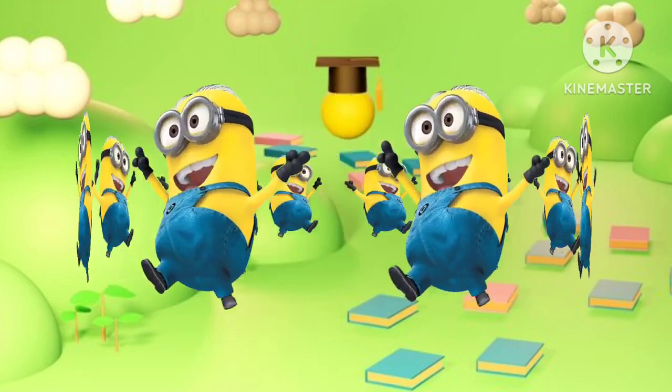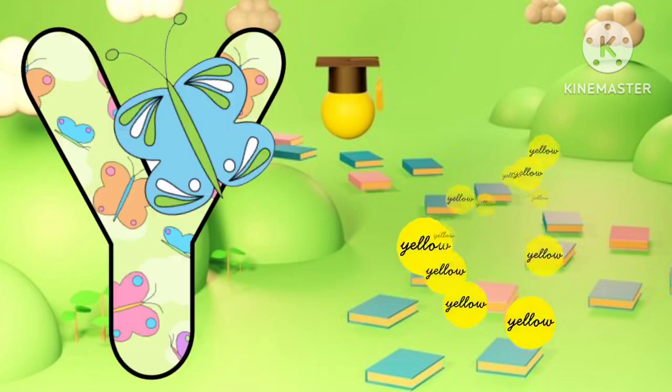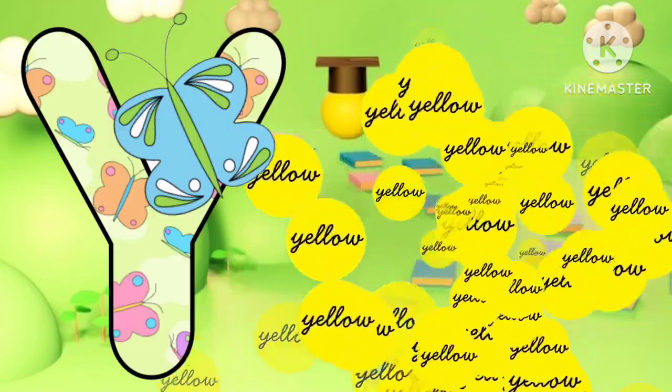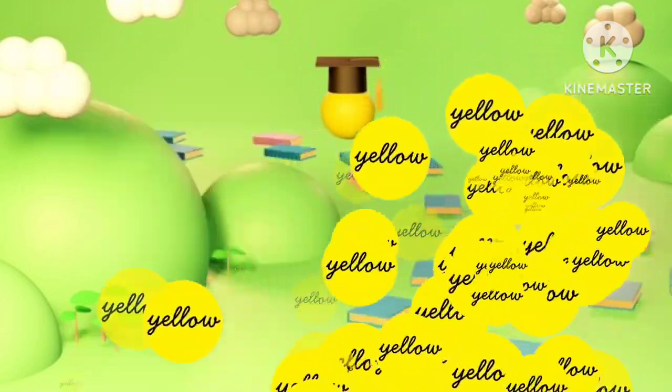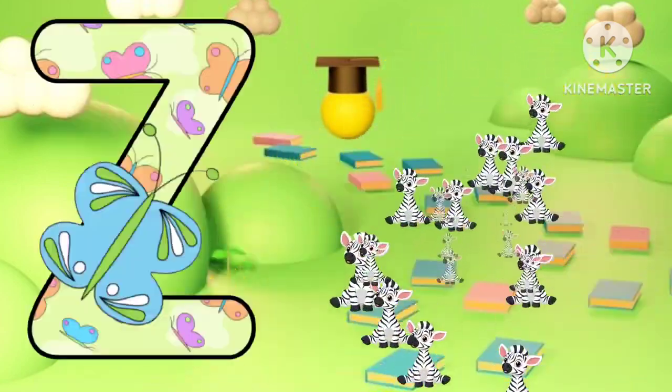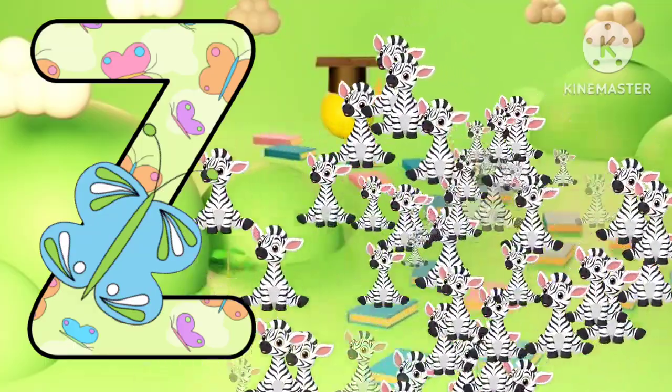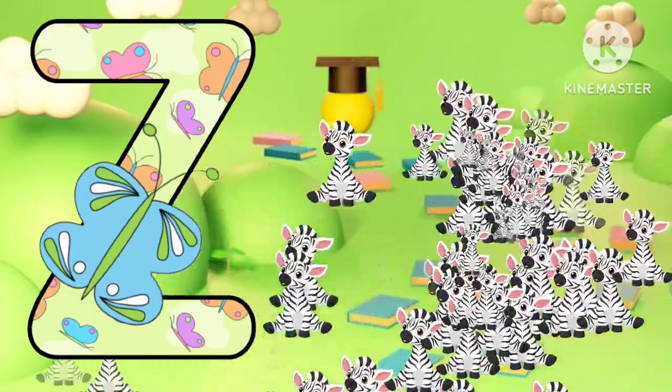Y is for yellow, ye-ye-yellow. Z is for zebra, z-z-zebra.